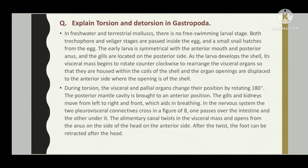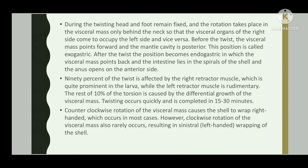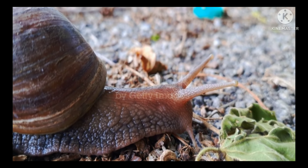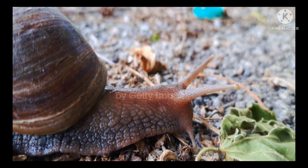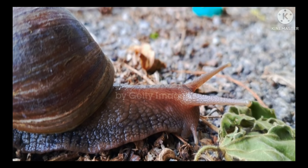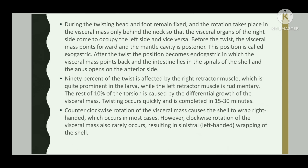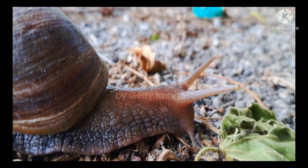After the twist, the foot can be retracted after the head. During the twisting, head and foot remain fixed and the rotation takes place in the visceral mass only behind the neck, so that the visceral organs of the right side come to occupy the left side and vice versa. Before the twist the visceral mass points forward and the mantle cavity is posterior — this position is called exogastric. After the twist the position becomes endogastric, in which the visceral mass points back and the intestine lies in the spirals of the shell, and the anus opens on the anterior side.